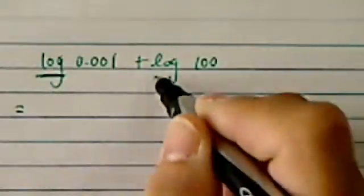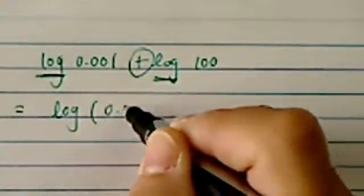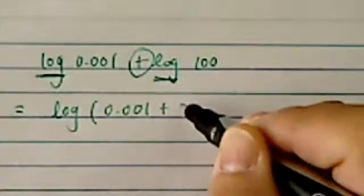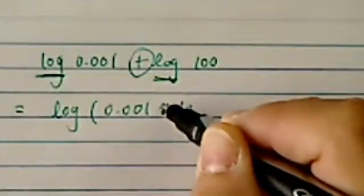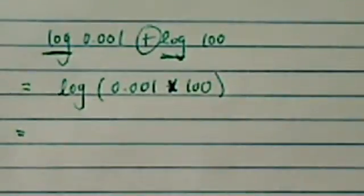Log has this property that if you have two logs with an adding sign in between, you can combine them into a multiplication. As a matter of fact, into multiplication. Log was invented to actually compute a large number of multiplication.